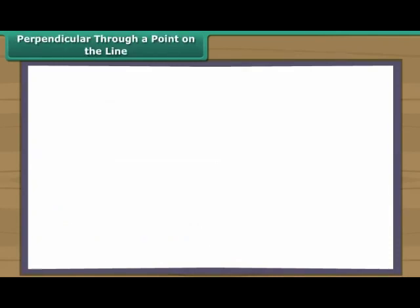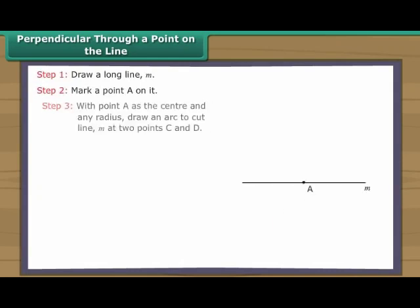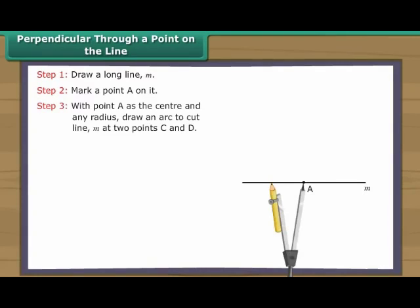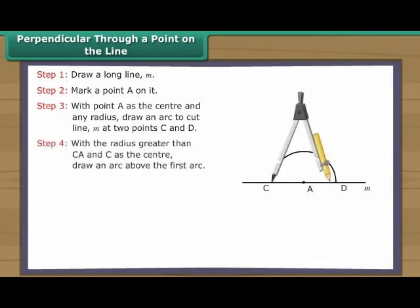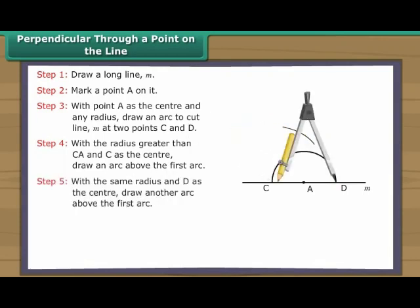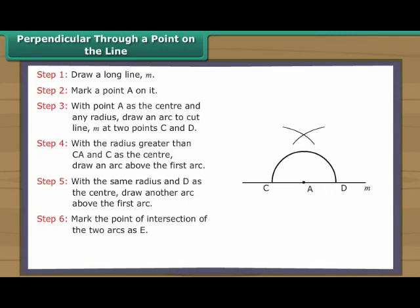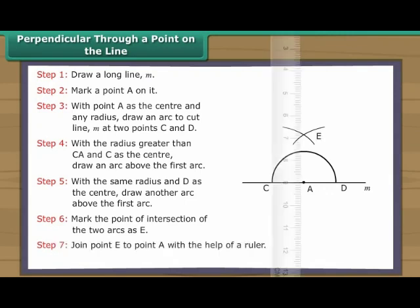Perpendicular through a point on the line. Draw a long line M. Mark a point A on it. With point A as the centre and any radius, draw an arc to cut line M at two points C and D. With a radius greater than CA and C as the centre, draw an arc above the first arc. With the same radius and D as the centre, draw another arc above the first arc. Mark the point of intersection of the two arcs as E. Join point E to point A with the help of a ruler. EA is perpendicular to line M.